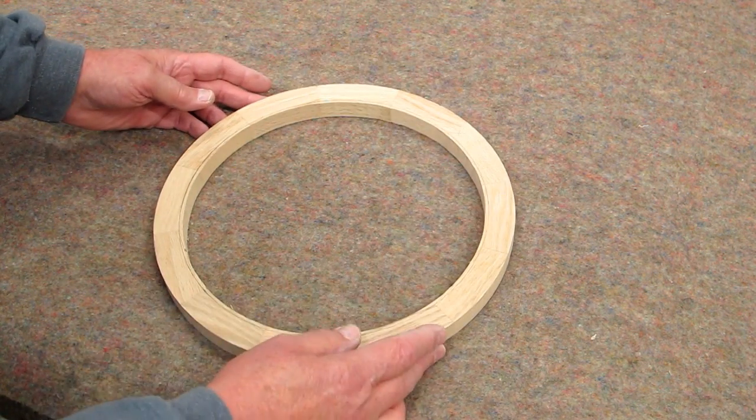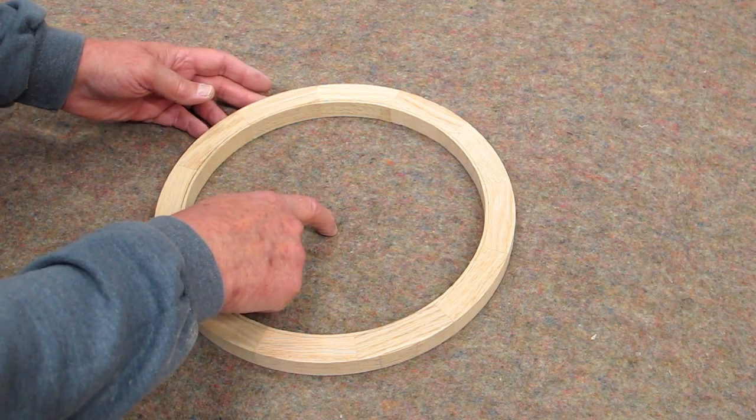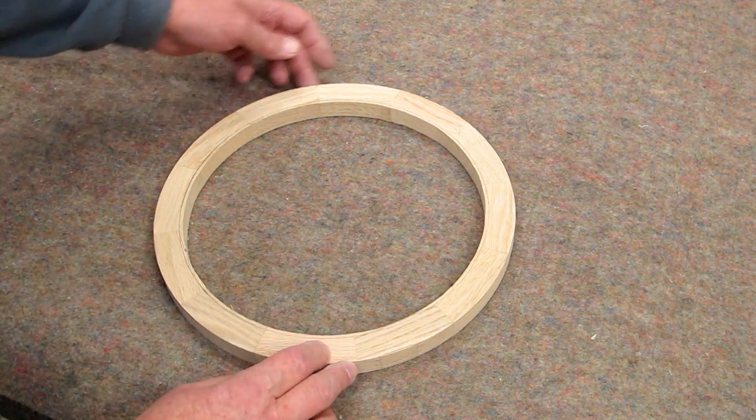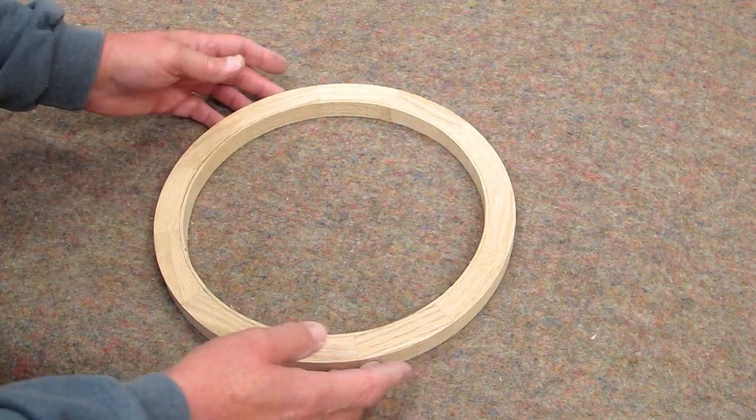I take my blank, drill the center hole, I can use my circle sanding jig on the disc sander to sand this outside diameter.